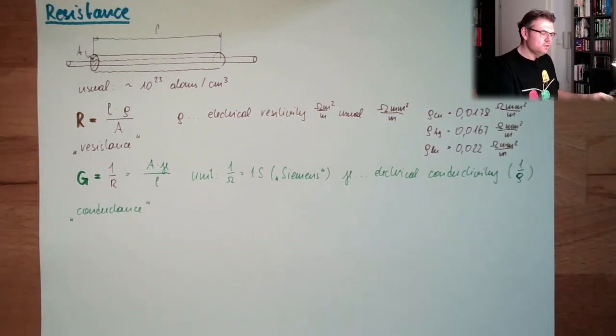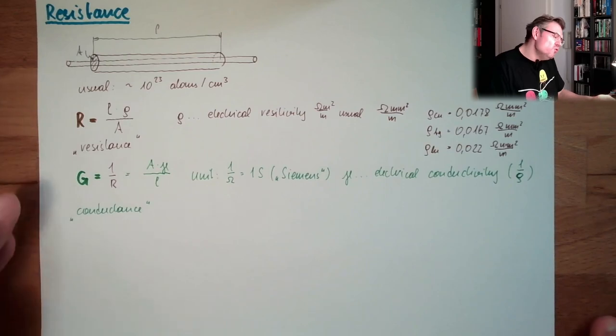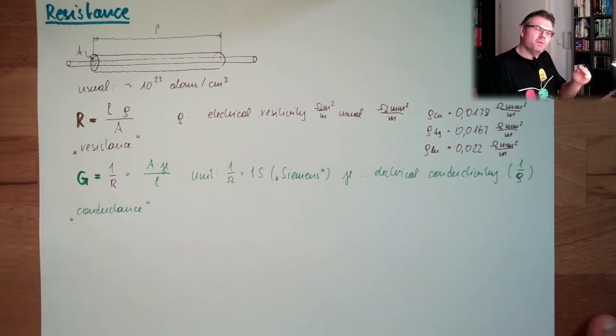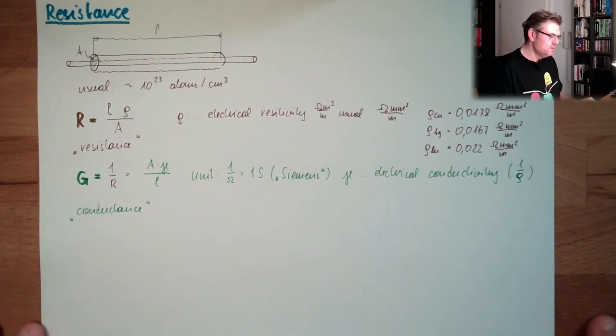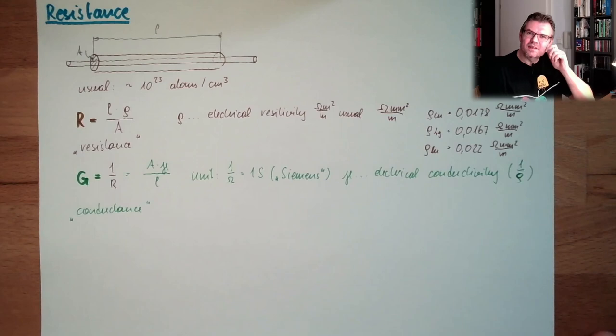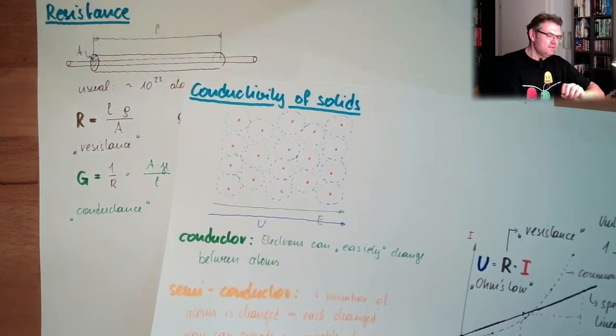Sometimes it's better to use the conductance than the resistance. When we're talking about parallel combinations of resistance, then this is better. We will see. It's not that usual to use this, but sometimes it's helpful. Good. But this is not the only thing which has influence on the resistance. There are also other things. So let's come back to this sheet.